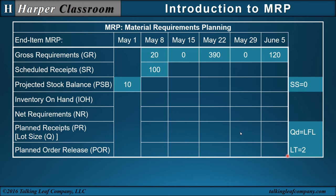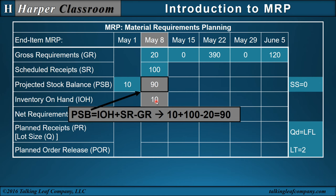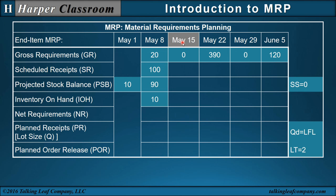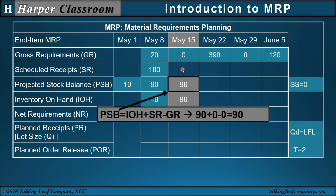Now let's generate the mechanics. The input values are highlighted in color to indicate they are fixed and will not change. For the first time period, the week of May 8th, I copy the 10 down from the projected stock balance — the ending inventory of May 1st — into the inventory on hand, which is the beginning inventory of May 8th. The projected stock balance equals beginning inventory plus receipts minus requirements, which equals ending inventory. For the next time period, the 90 carries over as the inventory on hand with no receipts and no requirements.